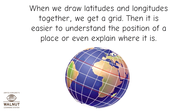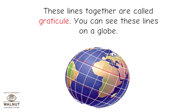When we draw latitudes and longitudes together, we get a grid. Then it is easier to understand the position of a place or even explain where it is. These lines together are called graticule. You can see these lines on a globe.